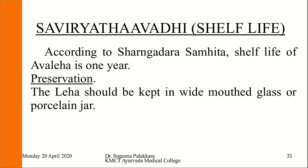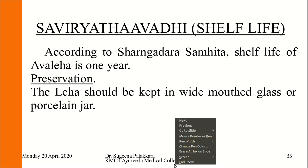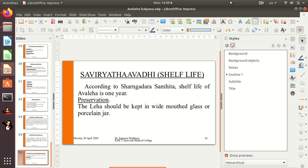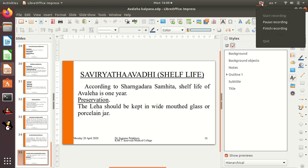Regarding shelf life: according to Sharangadhara Samhita, the shelf life of Avaleha is one year, and it should be preserved in a wide-mouthed glass or porcelain jar. This concludes today's topic of discussion on Avaleha Kalpana. Any doubts can be asked in the Google Classroom or WhatsApp group.